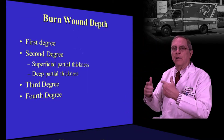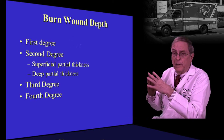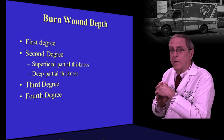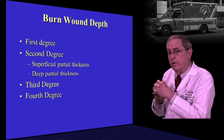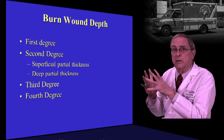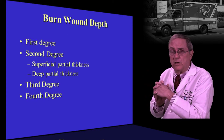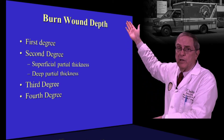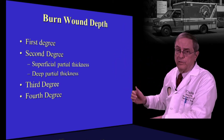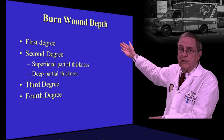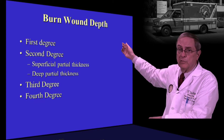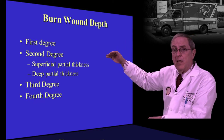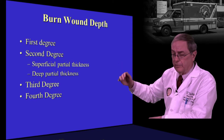Let's talk about burn wound depth first, then we'll discuss calculation of total body surface area. In layman's terms we have first, second, third, and fourth degree burns. Within second degree burns — also called partial thickness burns — we have superficial and deep partial thickness burns. The distinction is important.